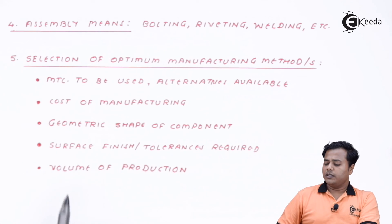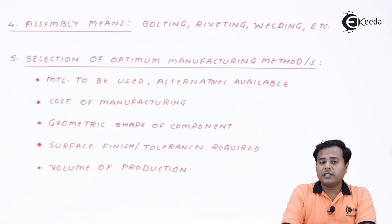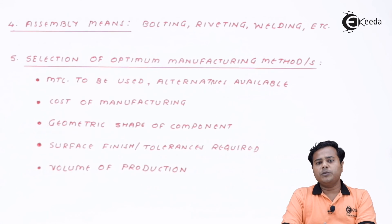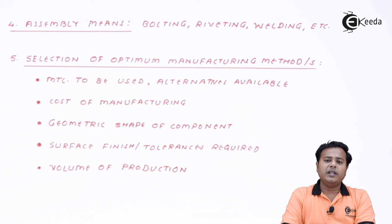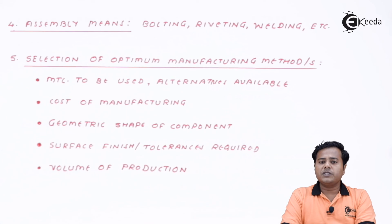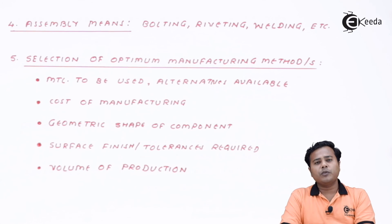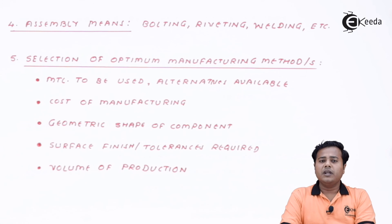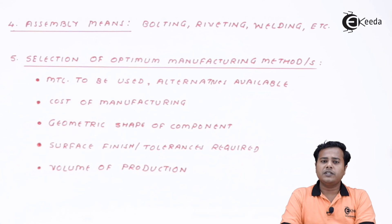The next important aspect is machine surface finish and tolerance required. Some components need very fine and minute surface finish detailing, while certain products don't require them. At the beginning itself, we should determine the surface finish and tolerances required. For example, if a product is cast, the surface finish is not that good — it's poor. But if a deformation procedure is used, we can achieve a better surface finish. Accordingly, we can decide and design from the beginning itself.